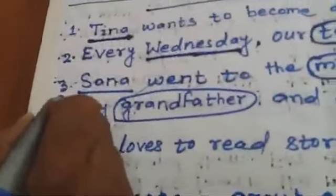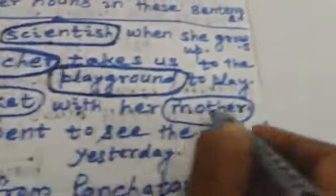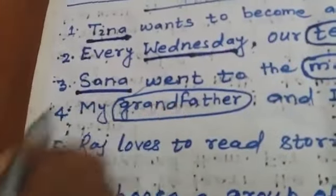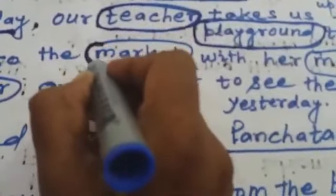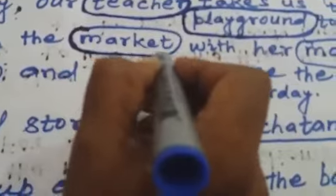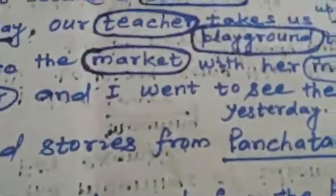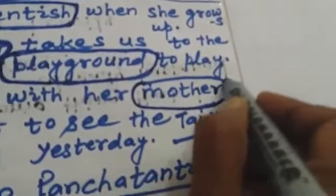Question number 3: 'Sona went to the market with her mother.' Here, 'Sona' is a proper noun — we underline it. 'Market' is a common noun — we circle it. 'Mother' is also a common noun — we circle it as well.